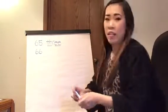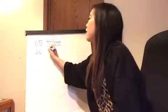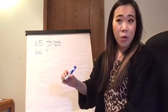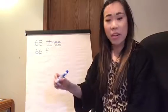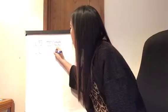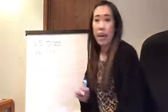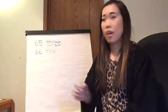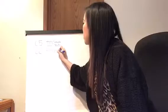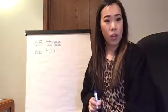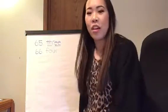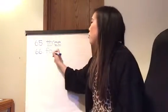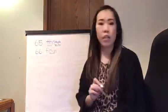So we have the word four. We have f. Ow, o, oo, uh. Remember that one is ow, o, oo, uh. And then the last sound we have is r. Four. Good. Now, ow, o, oo, uh. We know it's a two-letter phonogram. We're going to underline it.